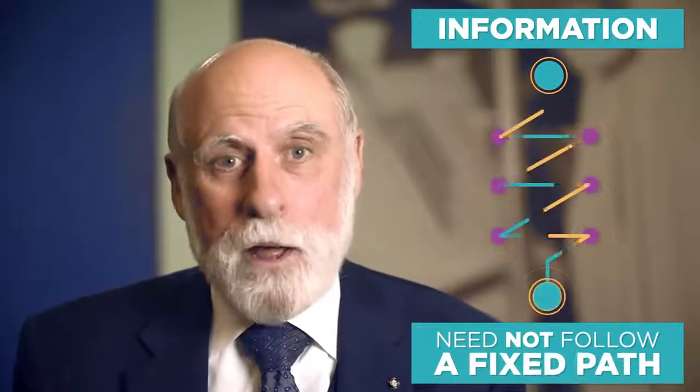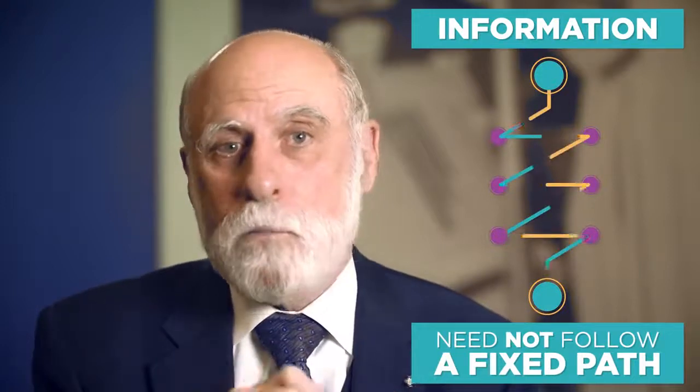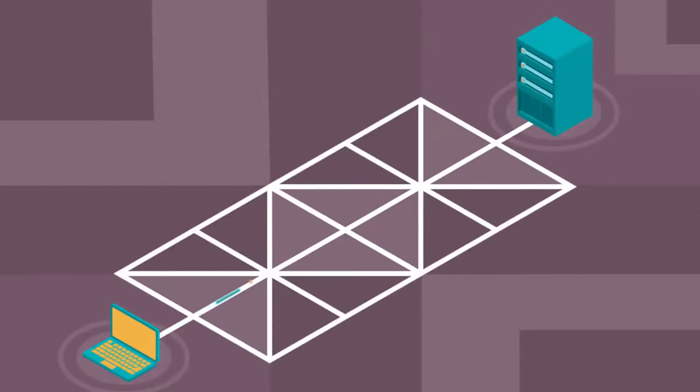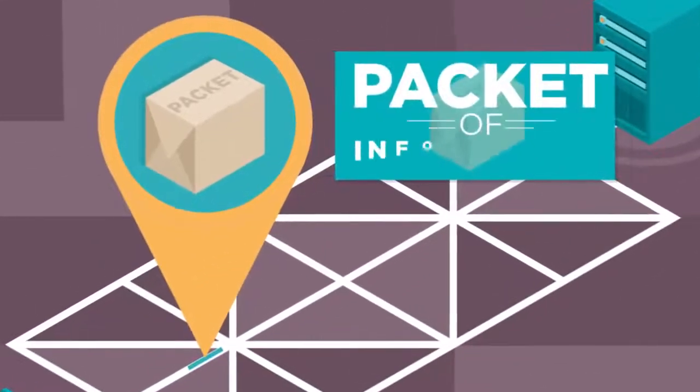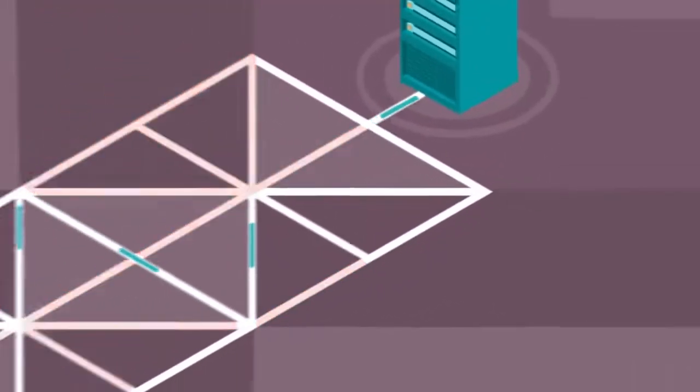The way information gets transferred from one computer to another is pretty interesting. It need not follow a fixed path. In fact, your path may change in the midst of a computer-to-computer conversation. Information on the internet goes from one computer to another in what we call a packet of information. And a packet travels from one place to another on the internet a lot like how you might get from one place to another in a car. Depending on traffic congestion or road conditions, you might choose or be forced to take a different route to get to the same place each time you travel.